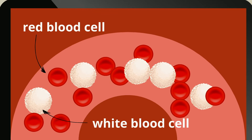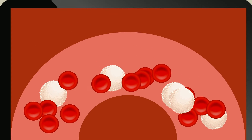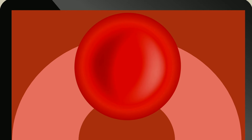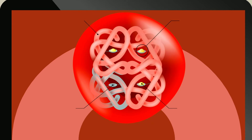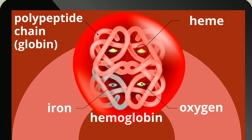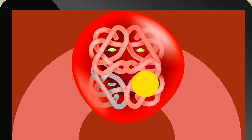Blood is actually made up of many tiny parts, each with a different job. Red blood cells' job is to carry oxygen all through the person's body. Hemoglobin is the special protein inside red blood cells that carries the oxygen.